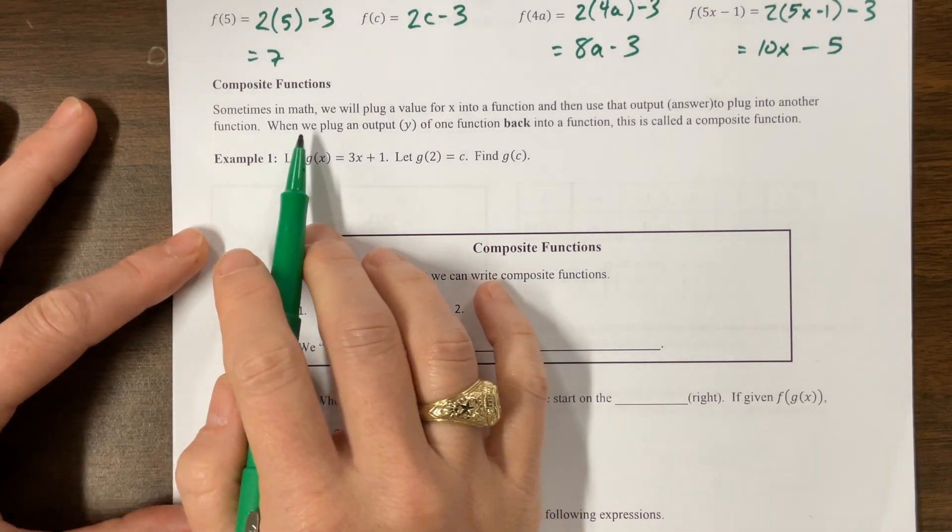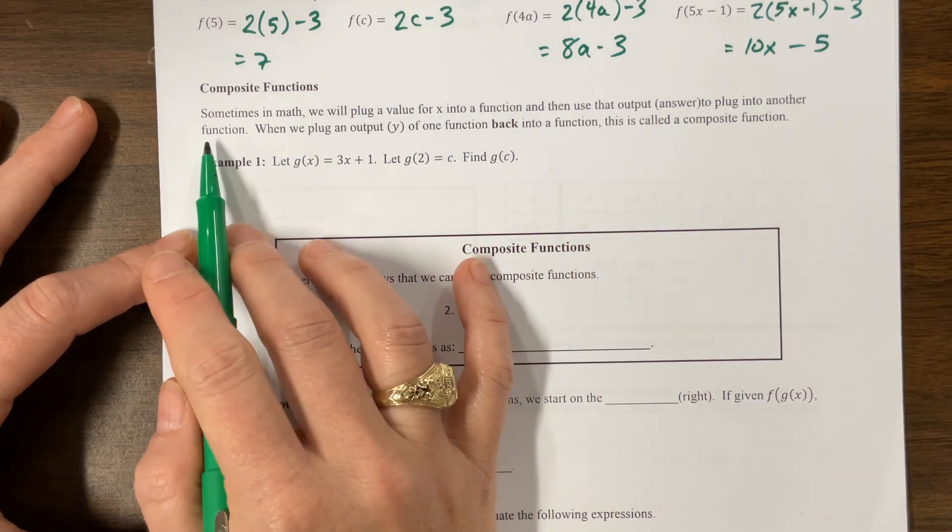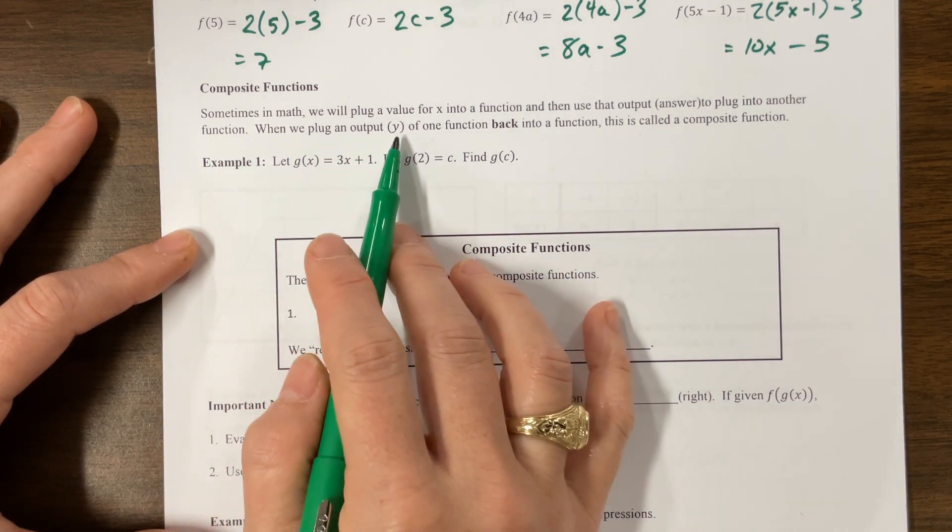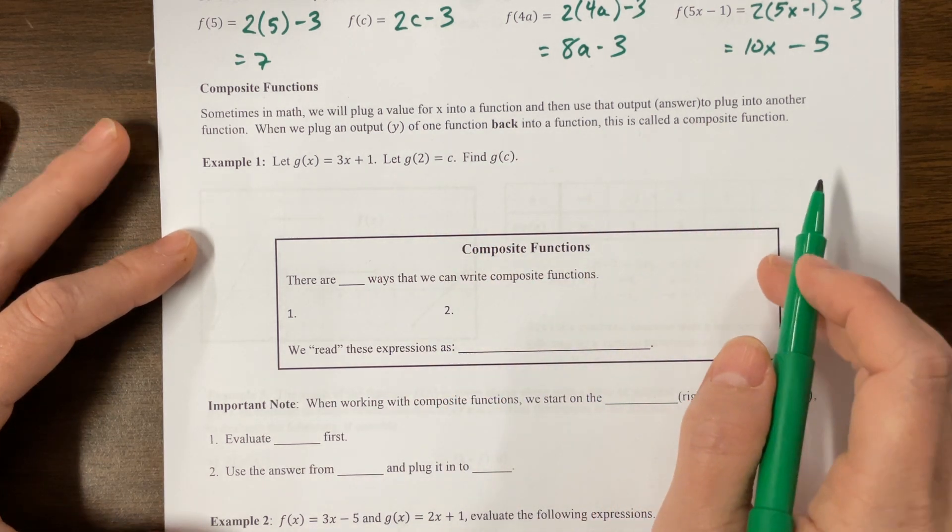Next we have f(5x - 2), so f was 2 times something minus 3, that something is now 5x - 1. I can clean this up a little bit. This is 10x and then minus 2 minus 3 gives me minus 5. Sometimes in math we will plug in a value for x into the function and then use that output to plug back into another function. When we plug an output of one function back into a function, that is called the composite function.